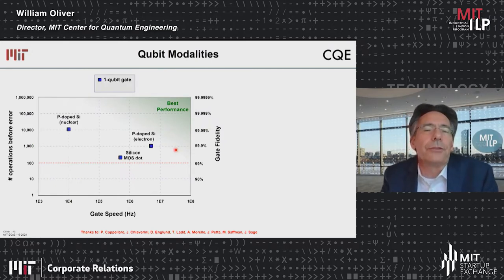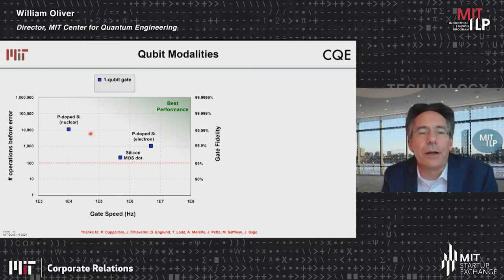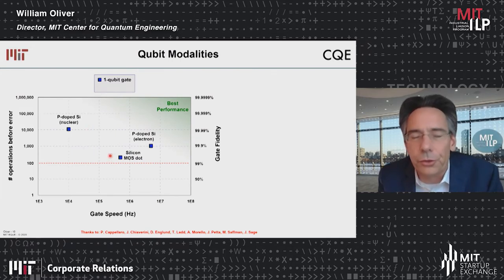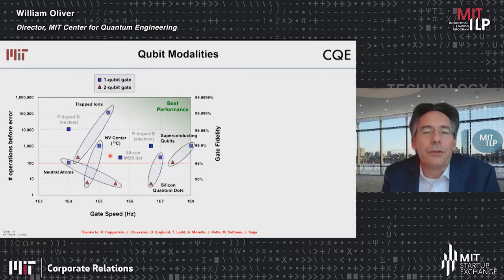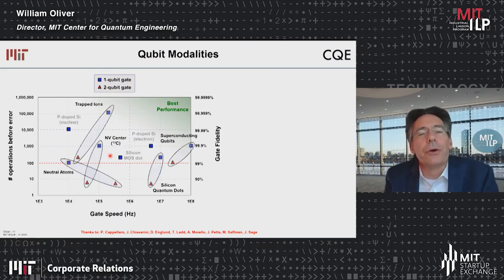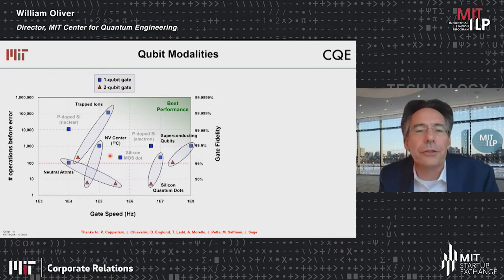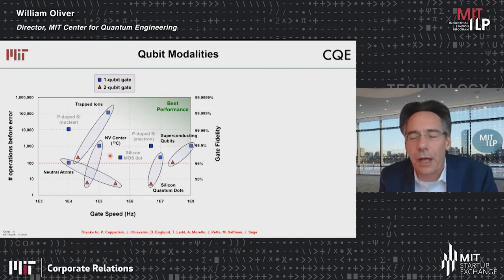There are a number of qubit technologies that have demonstrated single qubit gates — for example, phosphorus doping in silicon or the silicon MOS dot, which are just recently demonstrating two qubit gates. The remainder have demonstrated the universal set of gates needed for quantum logic — both single and two qubit gates — across a number of technologies highlighted in the coming slides.